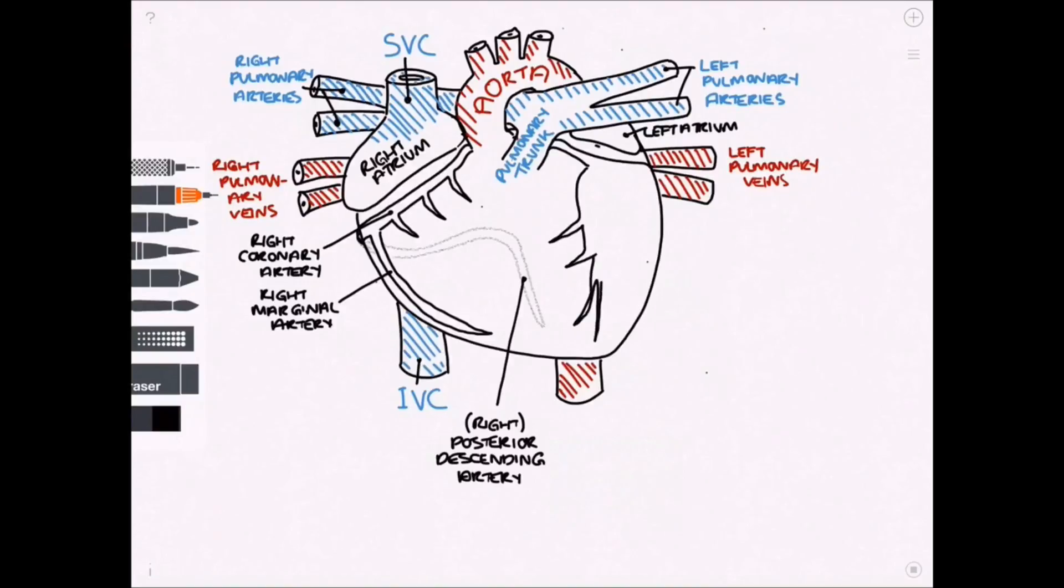Now we have the left coronary artery coming out of the left hand side of the aorta. As this branches round to the side, it becomes known as the left circumflex artery. And this continues round onto the back as well.